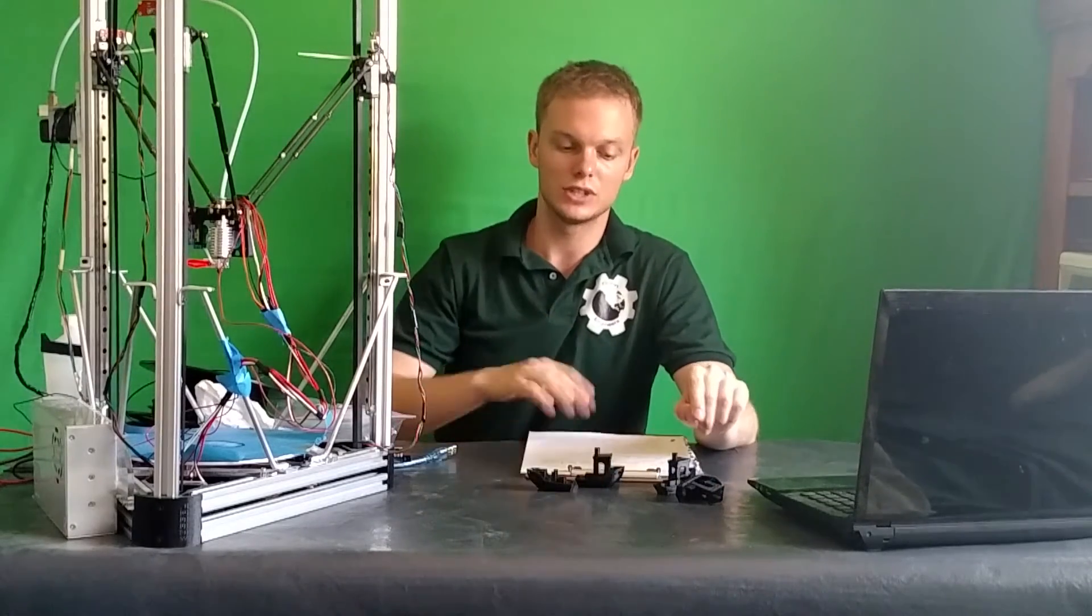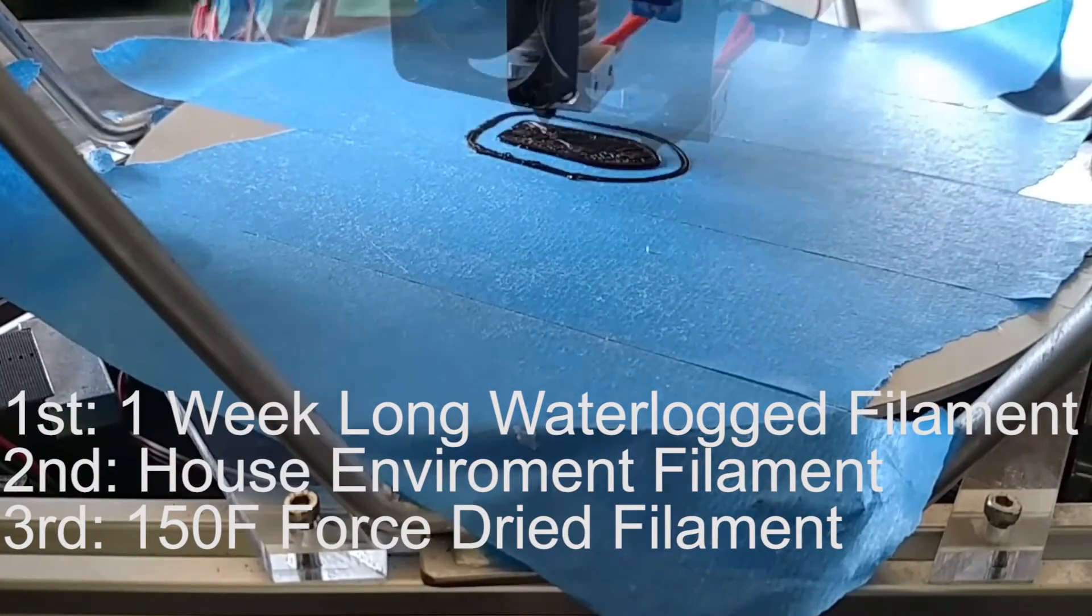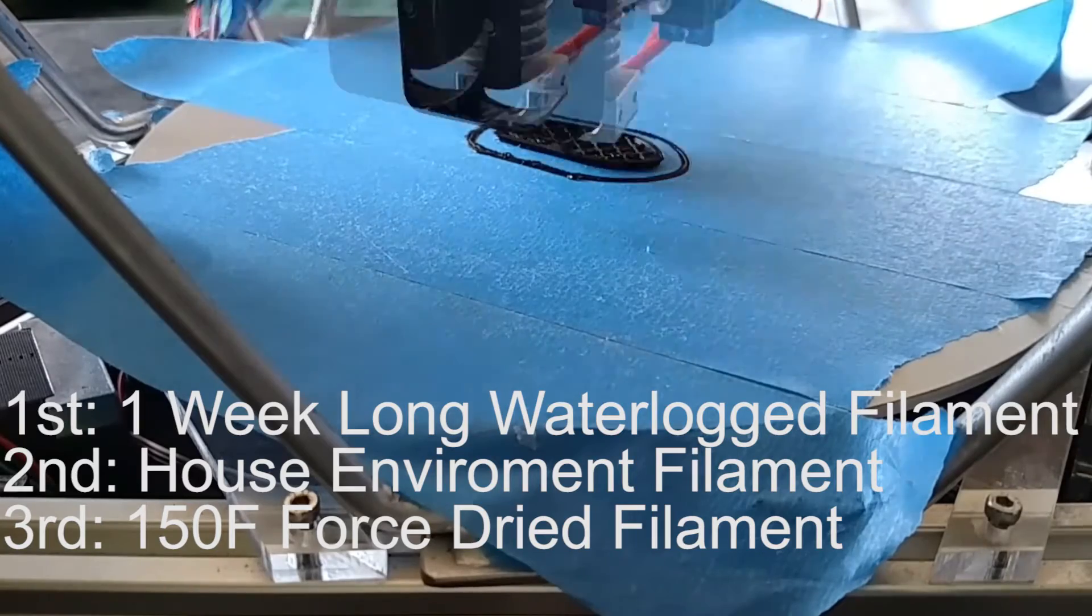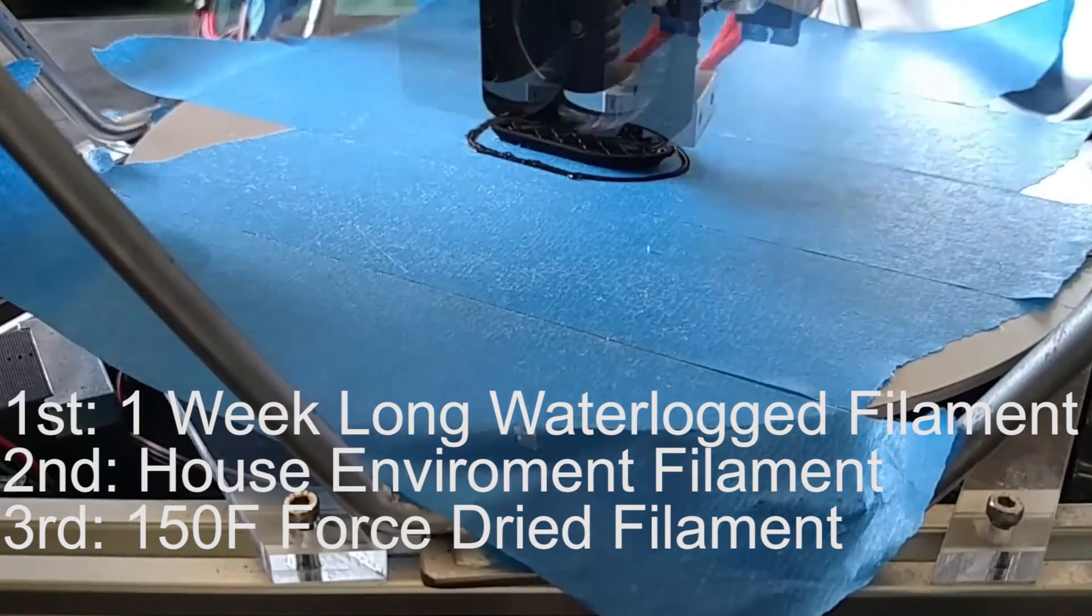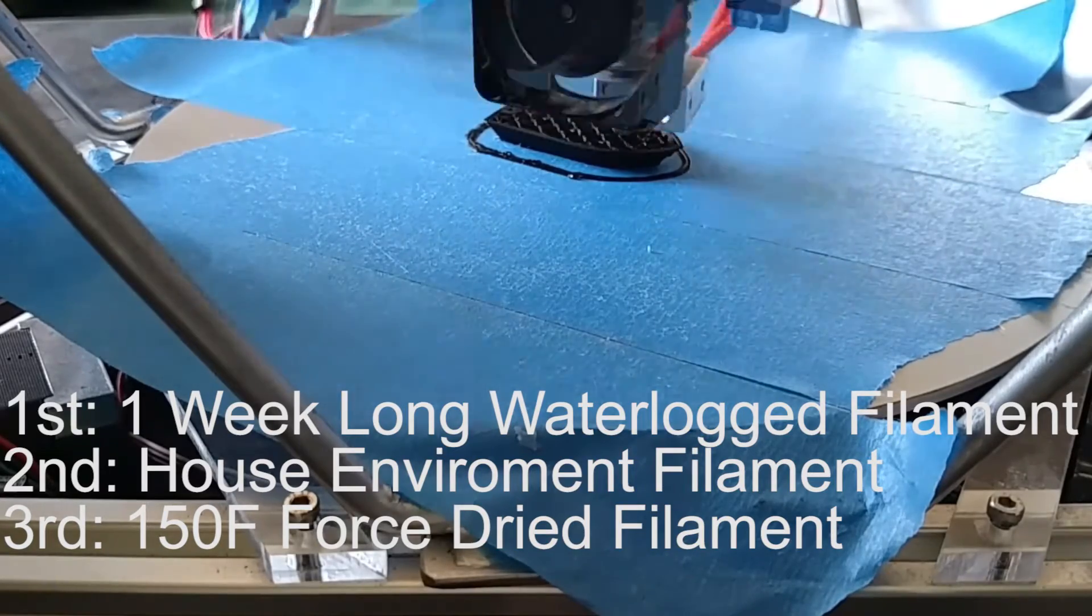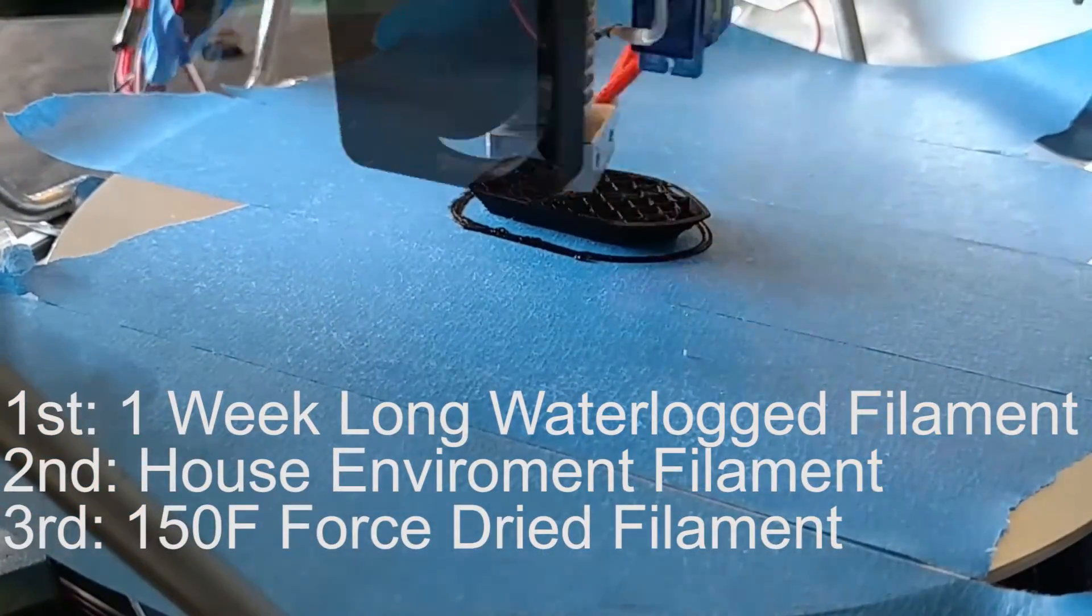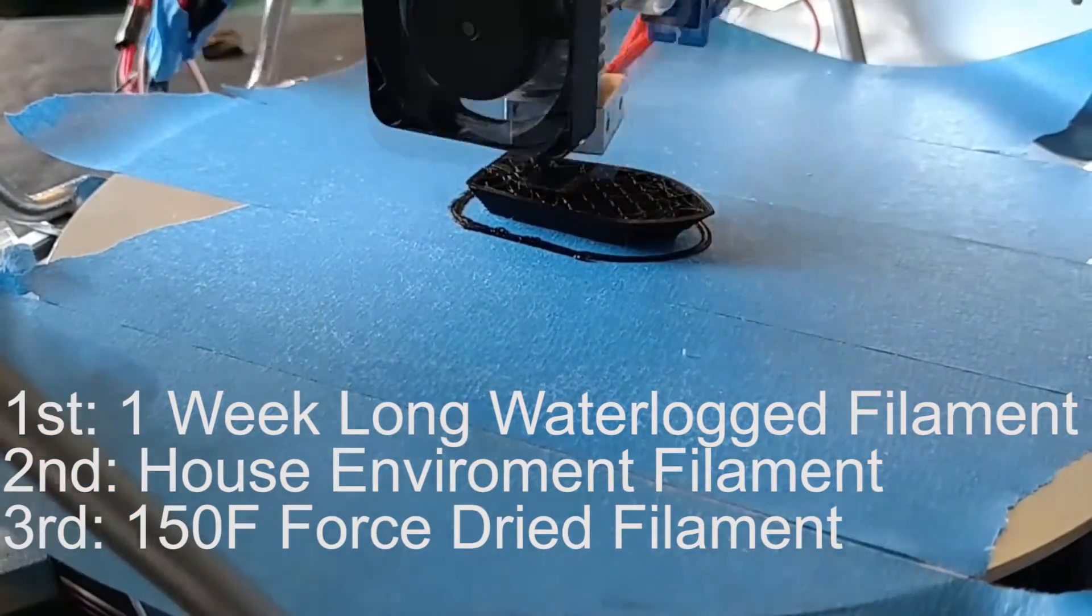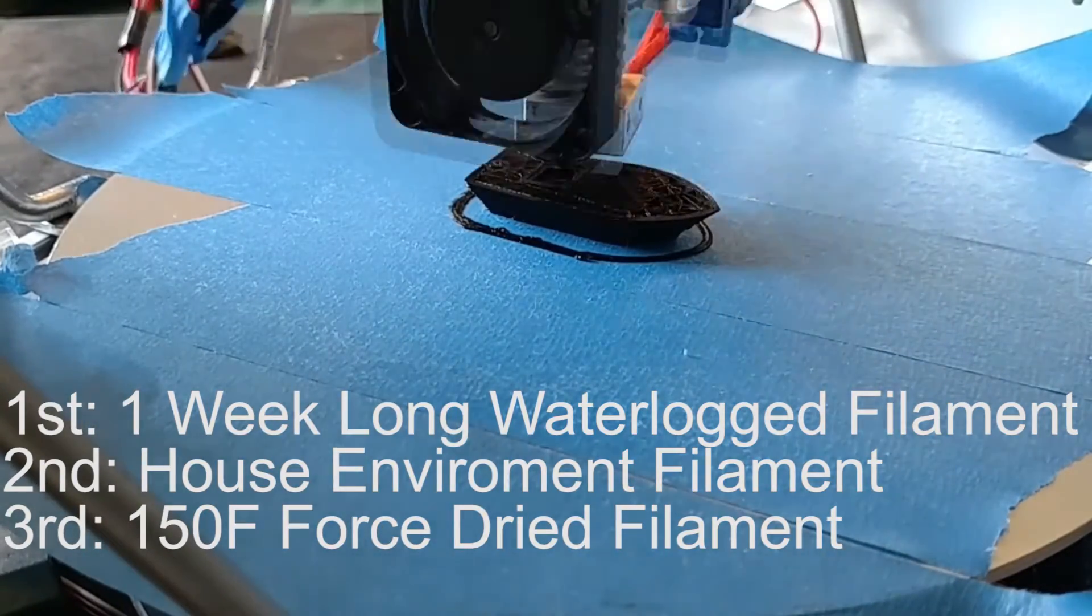So I got my little notes here. For the experiment, I used three different samples of Octave PLA filament at 1.75mm. The first sample was the extreme as far as moisture content, the waterlogged filament. I took filament and put it in a pitcher of water and had it soak for a week. That is assumed to be the maximum moisture that the PLA could hold.